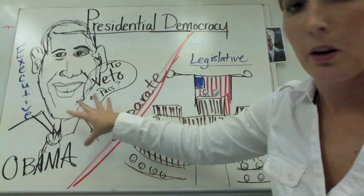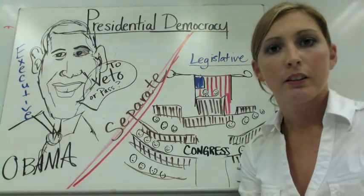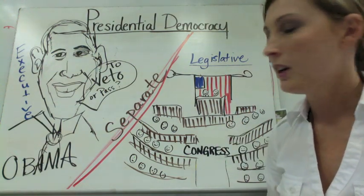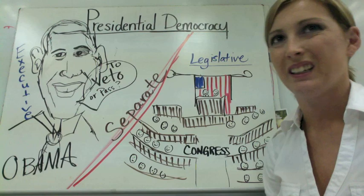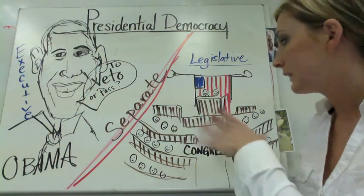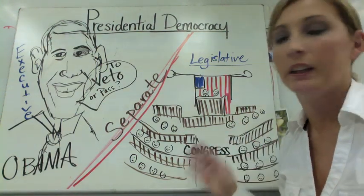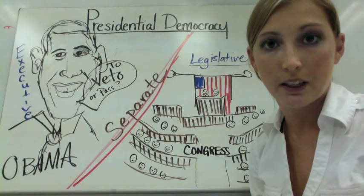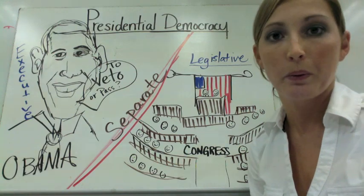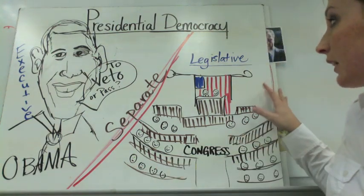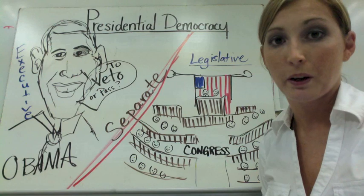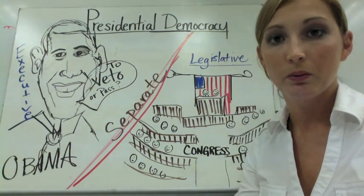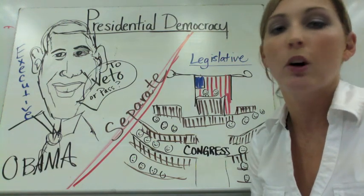President Obama can say a law should be made and he can talk to Congress and say, 'Can you write up a bill for this law?' Congress in turn will write up a bill — or say they don't think so — and once they're done writing up the bill, if they decide to, they can send it back to President Obama, who would either sign or not sign the bill, which would determine whether or not the bill is passed.